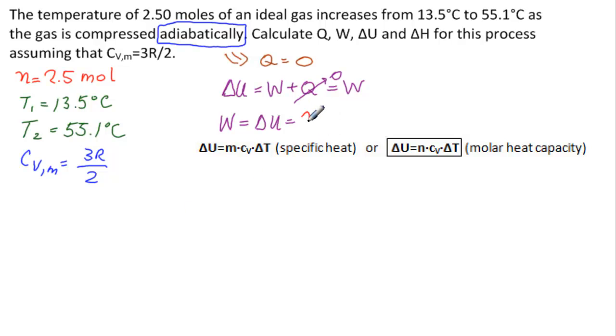So this is 2.5 moles. We have C_v is 3R over 2, so 3 times 8.3146, and that's joules per mole kelvin divided by 2, and then times the difference in these. And why can we write kelvin? It's because if we add 273 to both of those, the 273s will cancel. So this is indeed kelvin.